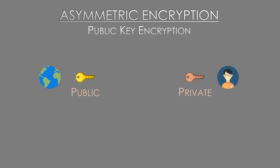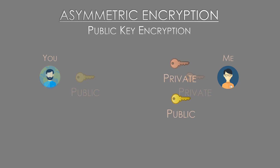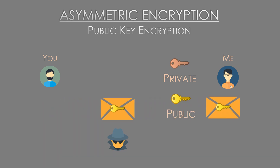As the two keys work together, we can encrypt with either one and use the other for decryption. Let's say this is my key pair and you want to send me a message. You can have my public key — no worries there. Using my public key you can encrypt your message and send it to me. If anyone intercepts the ciphertext, there's nothing they can do as they don't have the corresponding private key. I'm the only one who holds the private key, so only I can decrypt the message.